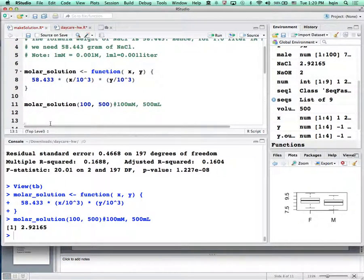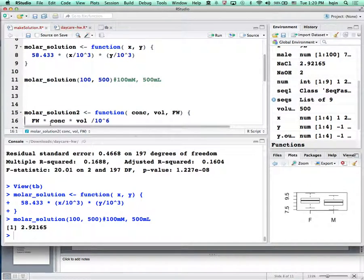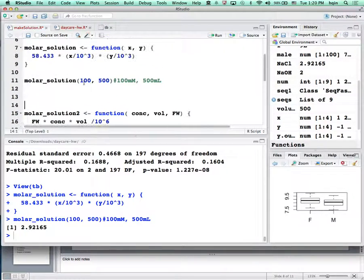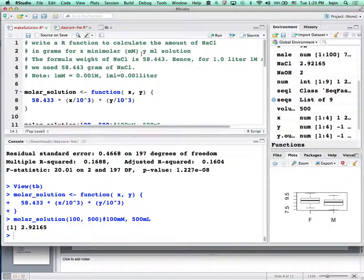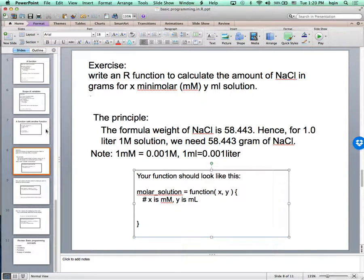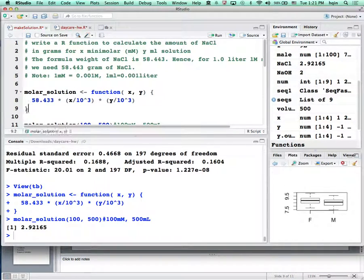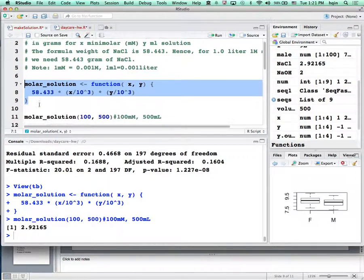This is fine, but it's only useful for sodium chloride. What if I want to make some other solution, say potassium chloride with formula weight 74.5513? This function is not helpful because I cannot change the molar mass.